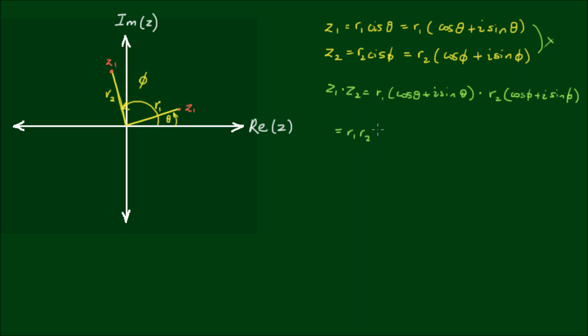So r1 and r2 can come out the front. And if I distribute this out, I'll get cos θ cos φ plus i cos θ sin φ plus i sin θ cos φ, and plus i squared sin θ sin φ.